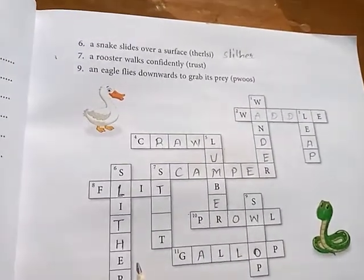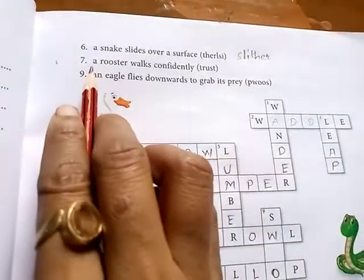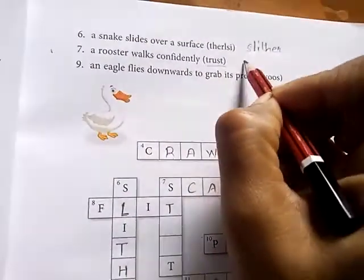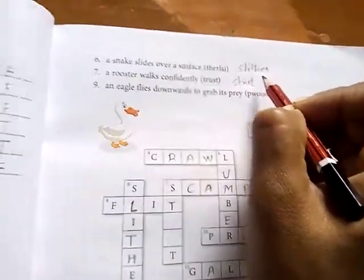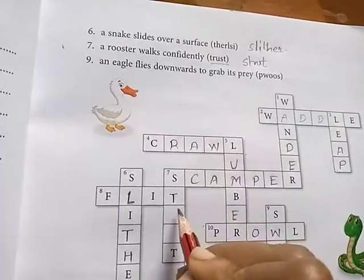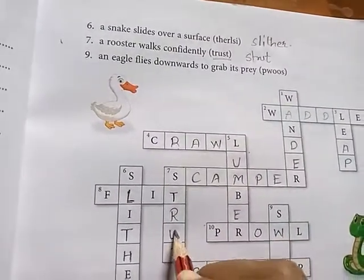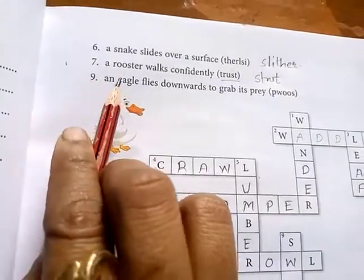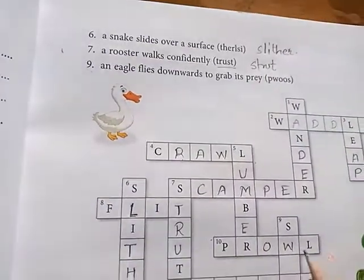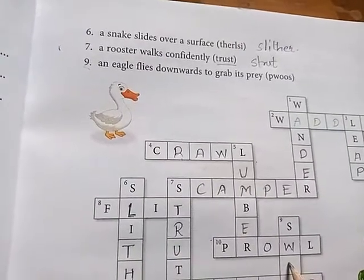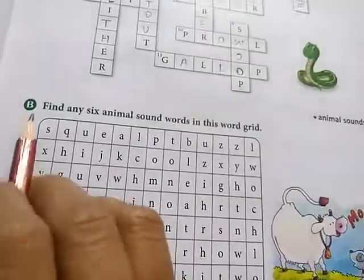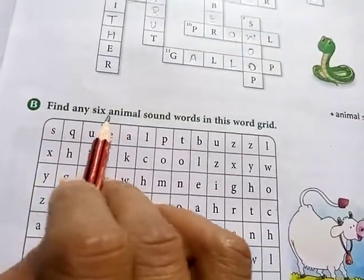Seventh down: a rooster walks confidently — that movement is called 'strut', spelled S-T-R-U-T. Last: an eagle flies downward to grab its prey — that is called 'swoop', spelled S-W-O-O-P.